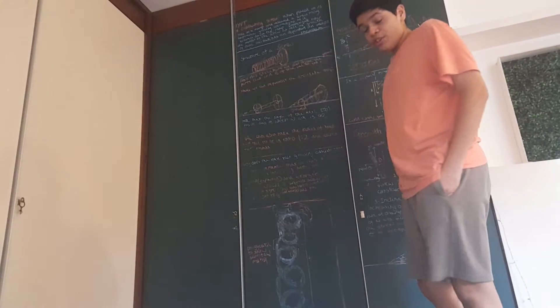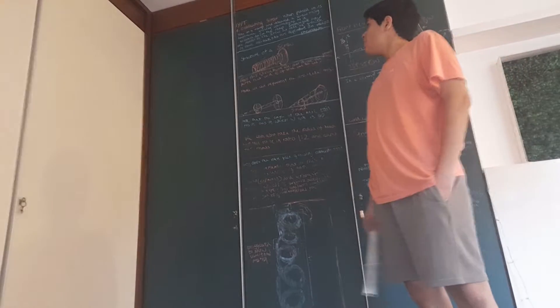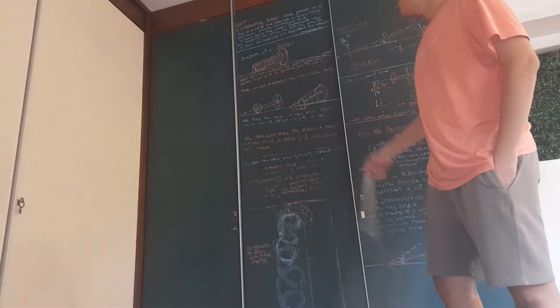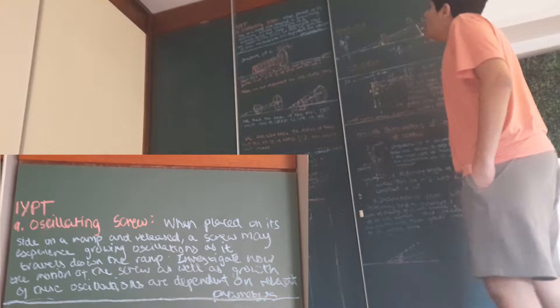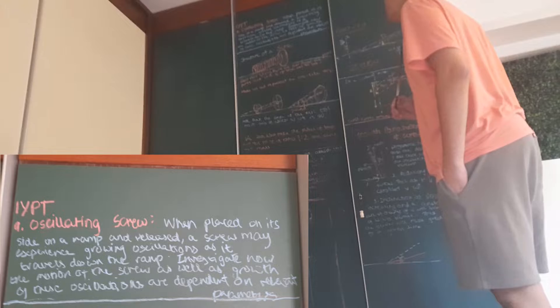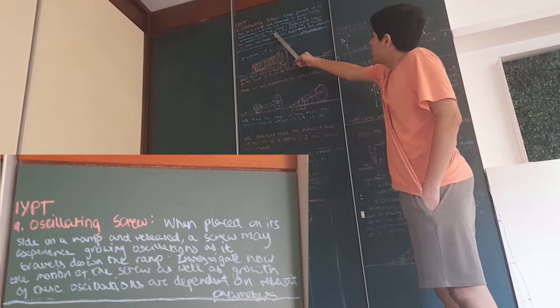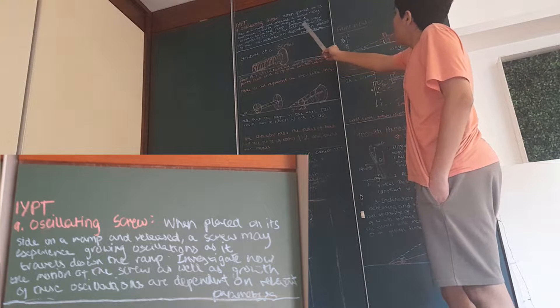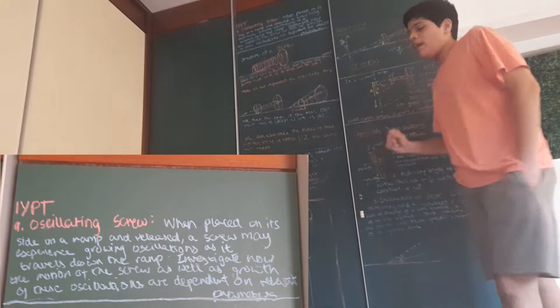Hello guys, I am Vyom Gupta and I study at the Cathedral in John Gordon School. Today I am going to be talking about an IYPT 2023 question, Question 9: Oscillating screw. When placed on its side on the ramp and released, a screw may experience growing oscillations as it travels down the ramp. Investigate how the motion of the screw as well as the growth of these oscillations are dependent on relevant parameters.